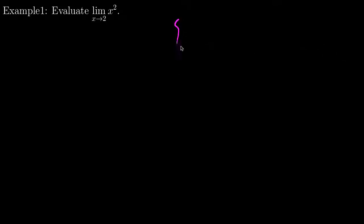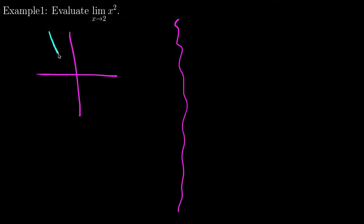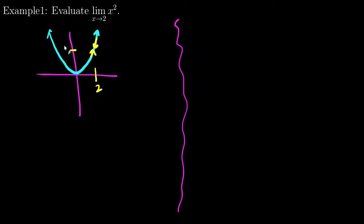So one option is to make a little graph. We know what X squared looks like, and as we get close to 2 from the left and from the right, the output gets close to 4. So the limit equals 4 — which shouldn't be surprising because 2 squared is 4. However, we can't always evaluate a limit just by evaluating the function. We'll see when we can and can't a few videos down the road when we talk about continuity.